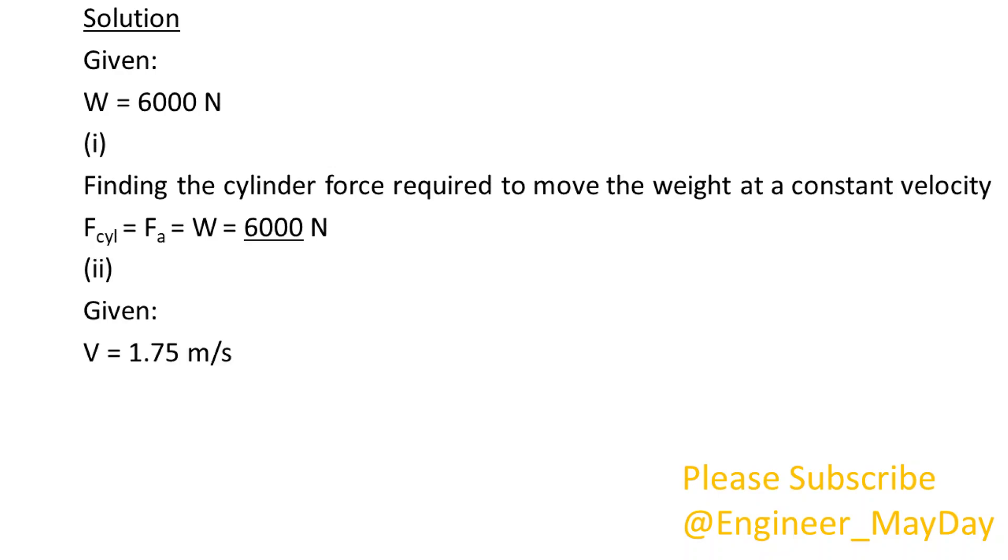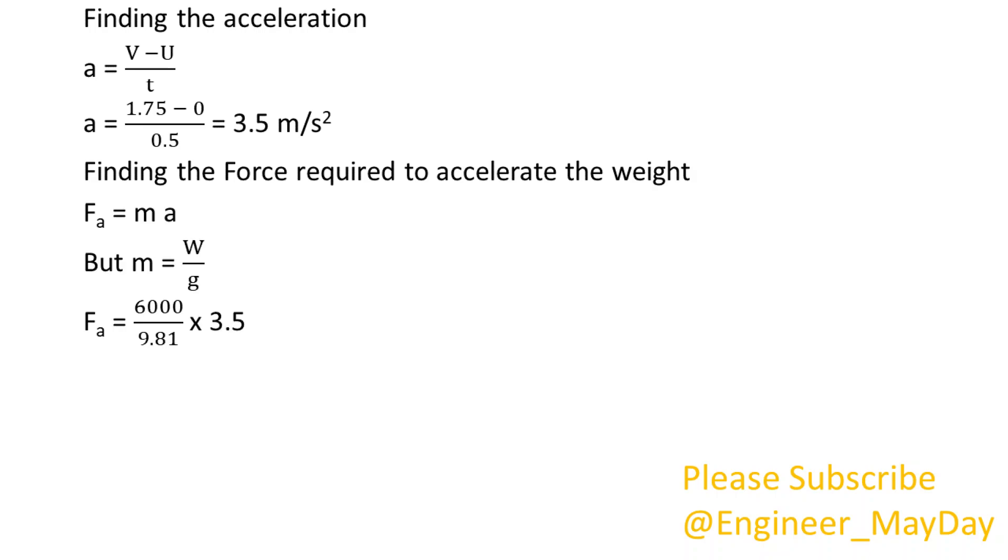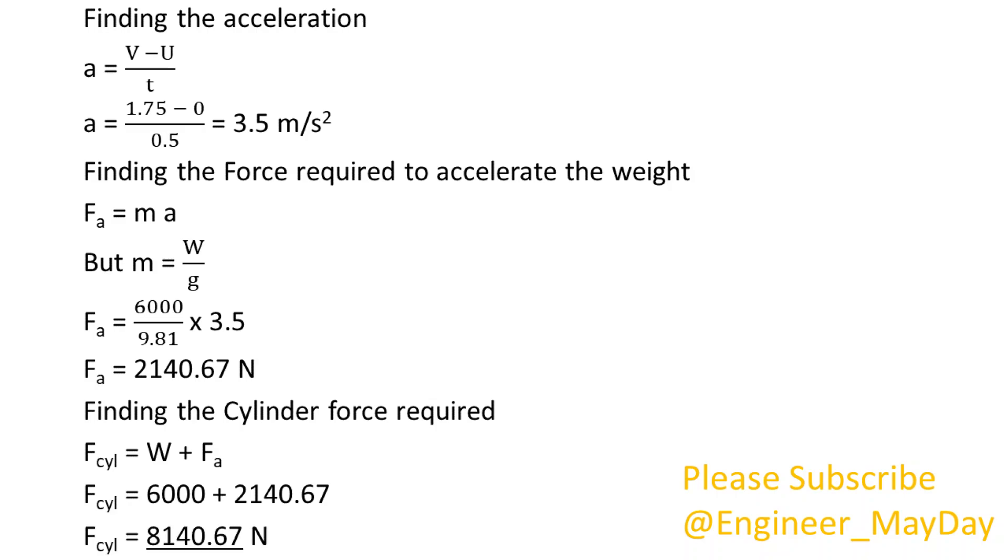Part 2. Given: Final velocity V equals 1.75 meters per second, initial velocity U equals 0 meters per second, time T equals 0.5 seconds. Finding the acceleration, which equals 3.5 meters per squared second. Finding the force required to accelerate the weight, which equals 2140.67 newtons. Finding the cylinder force required, cylinder force equals 8140.67 newtons.